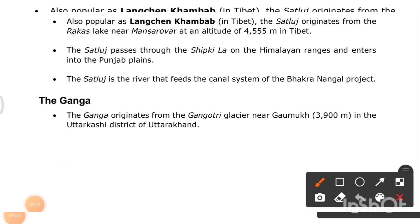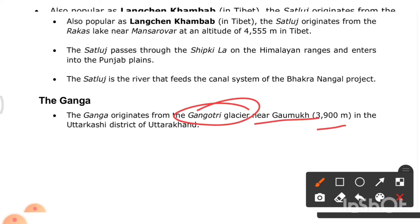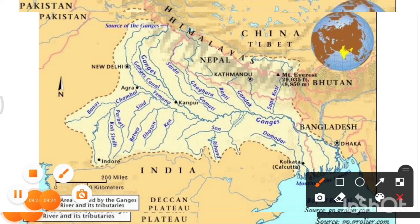Now we talk about the Ganga, also called the Ganges. The Ganga originates from the Gangotri Glacier near Gomukh at an altitude of 3,900 meters in the Uttarkashi district of Uttarakhand. This map shows the area drained by the Ganga and its tributaries.